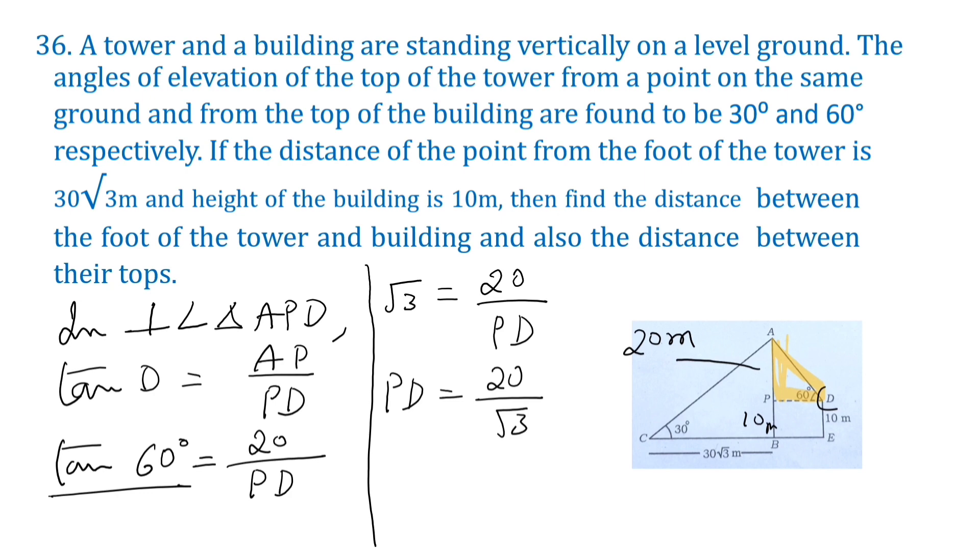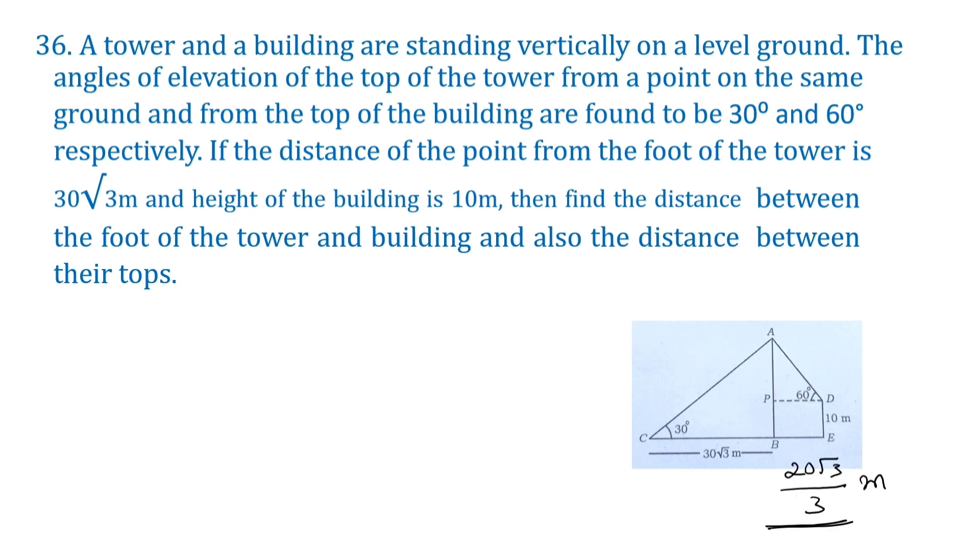If you don't want to put root 3 in the denominator, you have to multiply both numerator and denominator by root 3. That is equal to 20 root 3 by 3 meters. We can observe that PD is equal to BE. So our task is to find the distance between the foot of the tower and the building. That is BE. BE is equal to 20 root 3 by 3 meters.